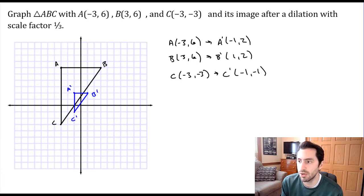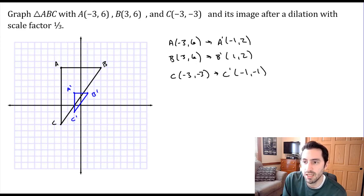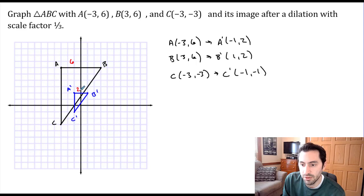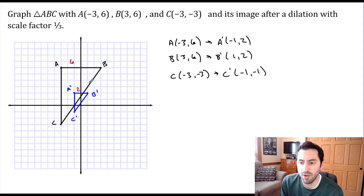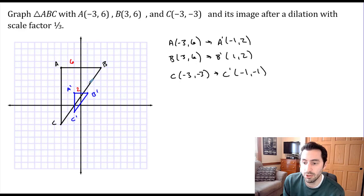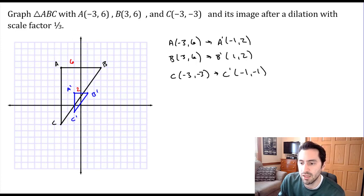If we compare the segment lengths: segment AB on the original triangle has a length of 6, and the length of A prime B prime in the image is 2. Comparing those, we can see our scale factor: 6 multiplied by one-third gives 2, which is the length of our new segment. Furthermore, if I go from my center of dilation and put a ray through point A, we can see that A prime moved along that ray, just closer to the center of dilation.